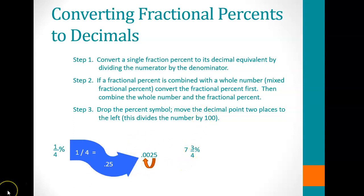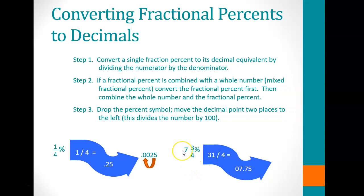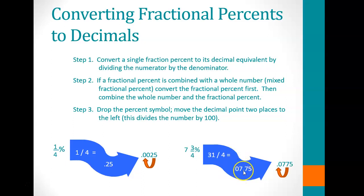What if you have 7 and three-fourths percent? First, multiply 4 times 7 to get 28, add 3 to get 31, giving 31 over 4 as a percent. Dividing 4 into 31 gives 7.75. Then, moving the decimal two spaces to the left, 7 and three-fourths percent becomes 0.0775 as a decimal.